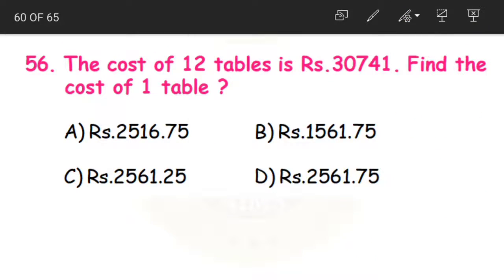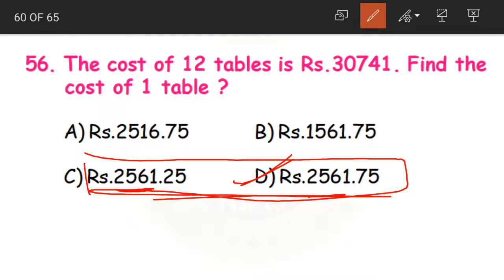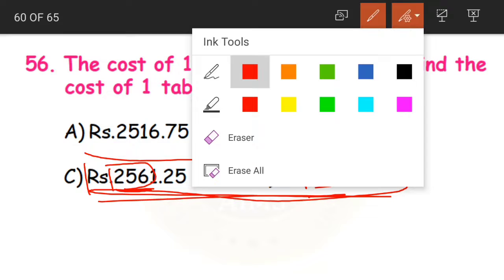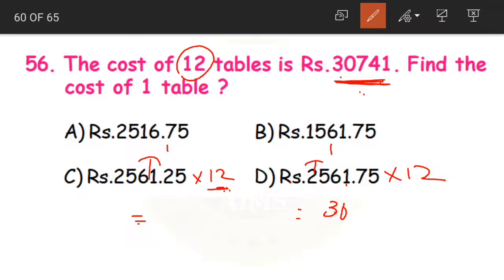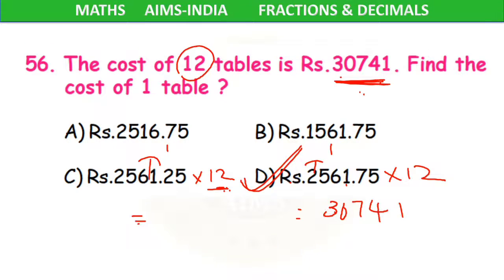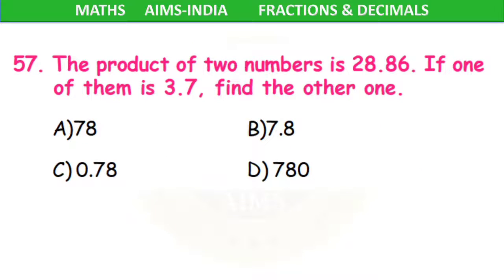If you are confused with this division because it is a little bit advanced, an alternative is: we got 2,561 as our quotient. From the given options, whichever has 2,561 as the whole number part could be the answer. Take the option, multiply by 12, and check whether the product equals 30,741. This is the trial and error method.